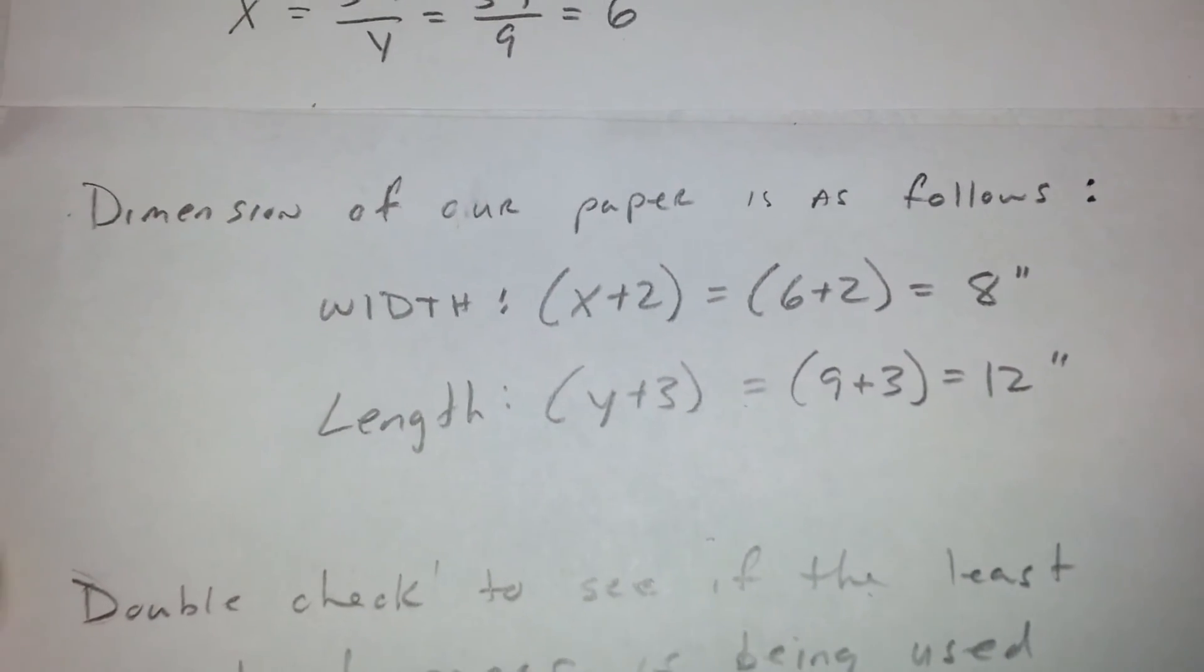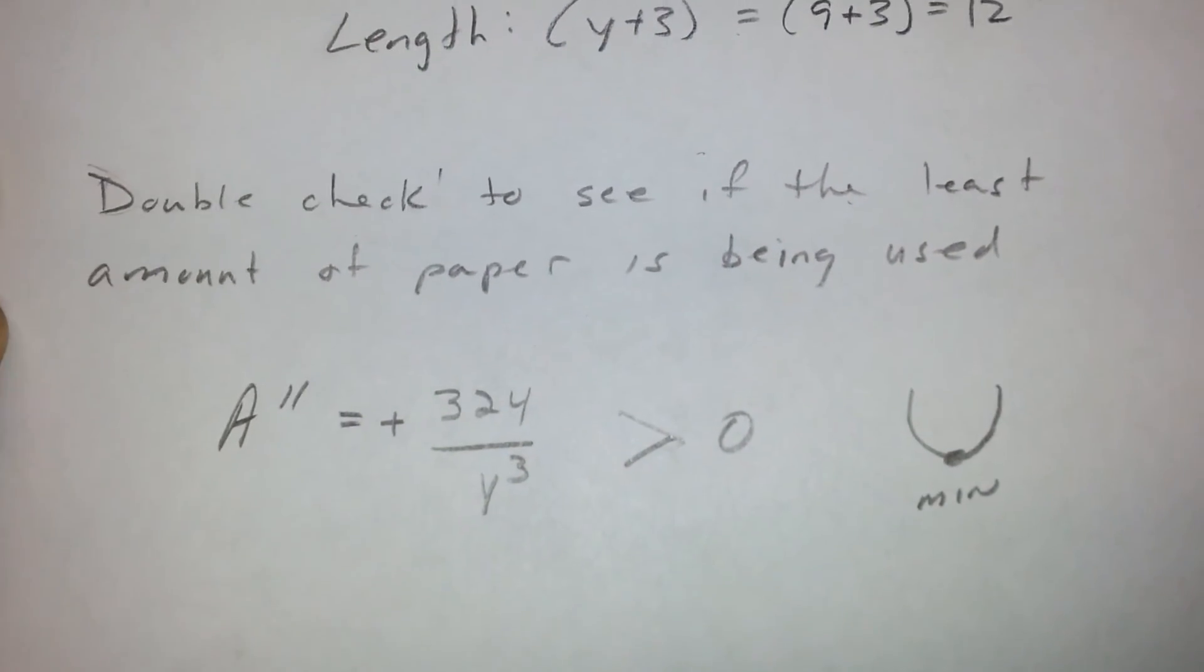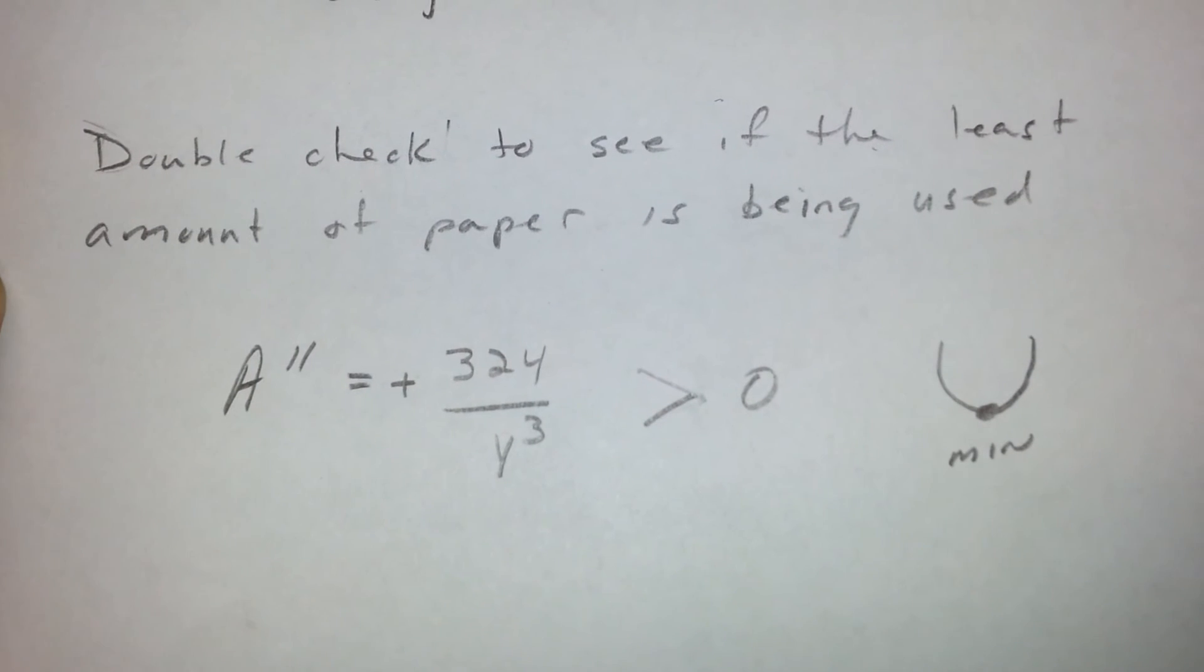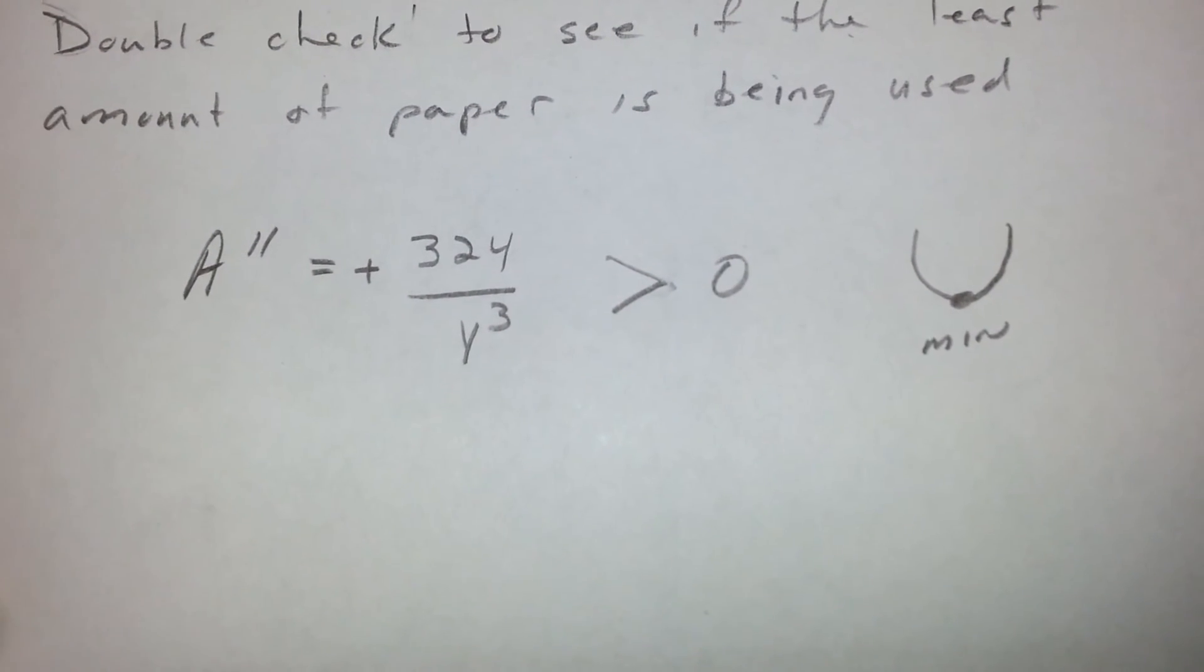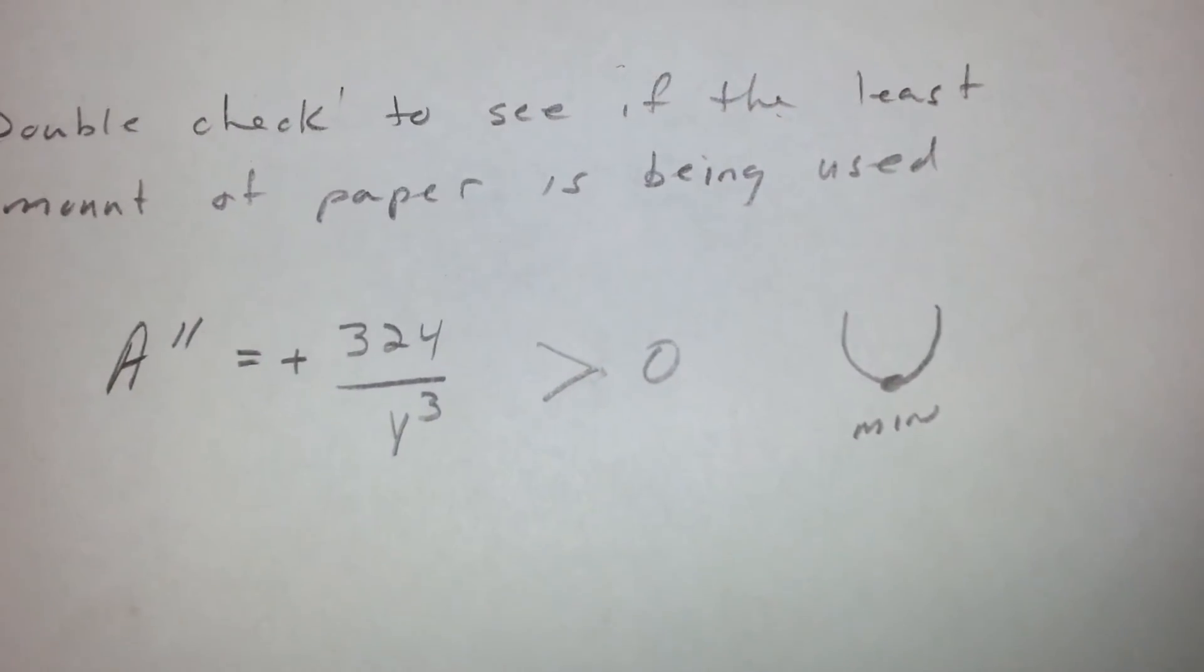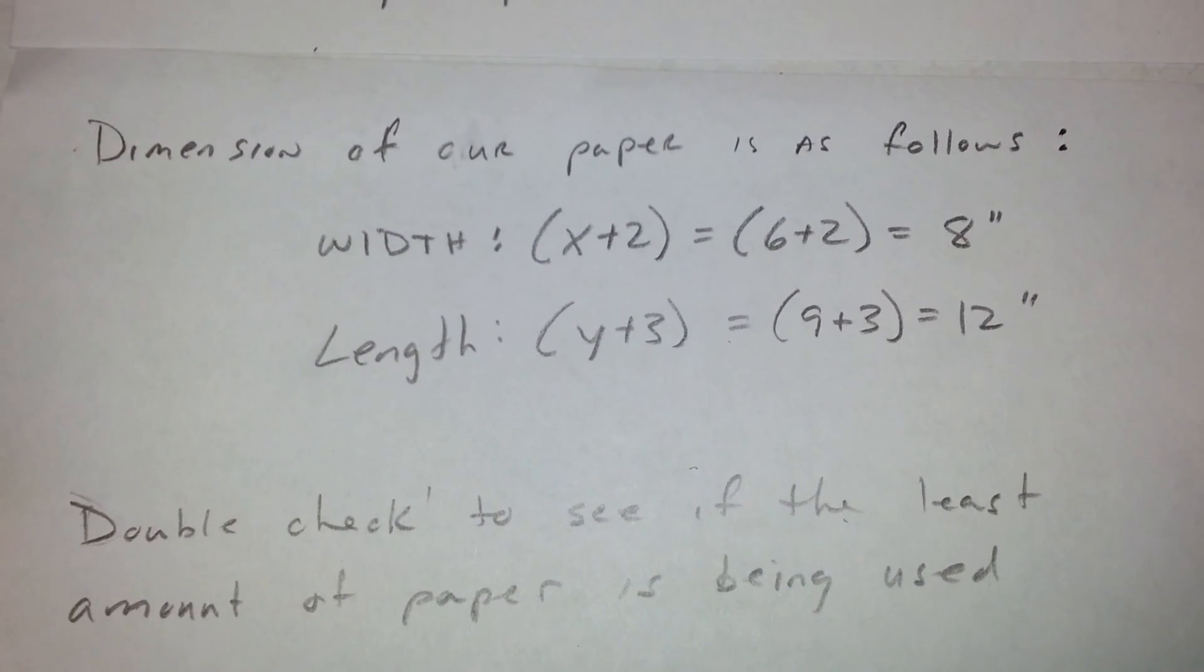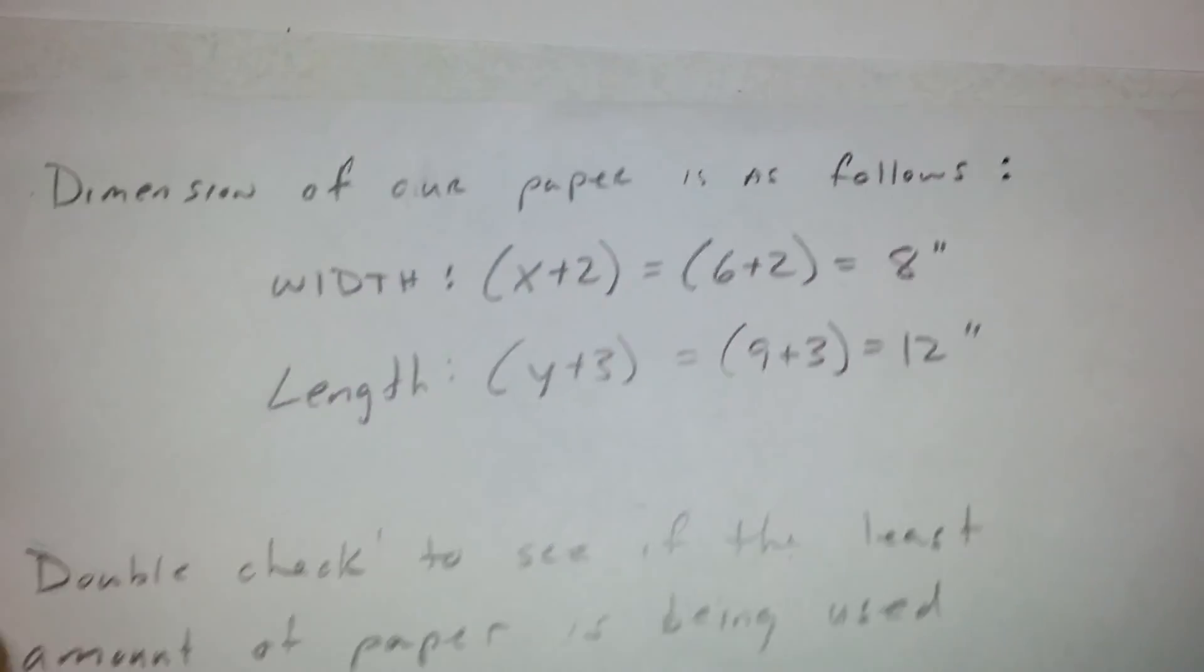To make sure that we got to double check to see if we got the least amount of paper, we will go to our second derivative. And then we know it's positive so that means that is our minimum. So our answer will be eight inches for the width and twelve inches for the length.